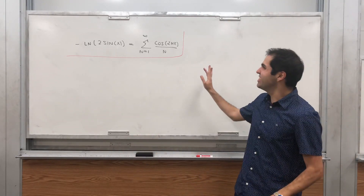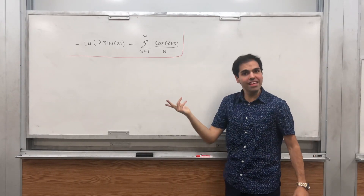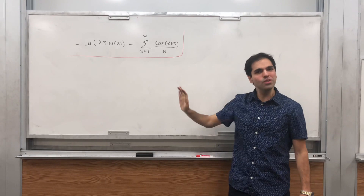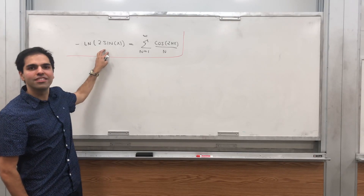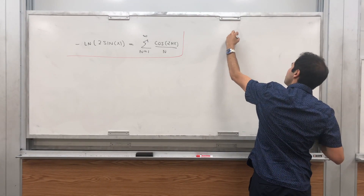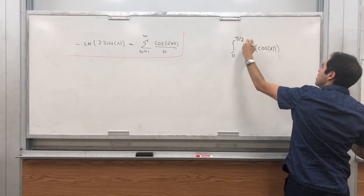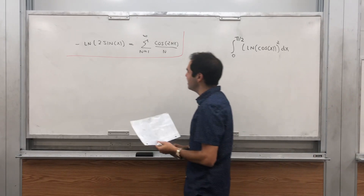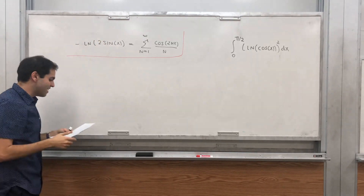Thanks for watching. Today I want to show you an absolutely beautiful identity that you might think involves Fourier series, but doesn't involve it at all. I will show this identity using pure calculus. I actually use an analog of this identity in another video to calculate the integral from 0 to π/2 of ln(cos(x))² dx. Today it's just to prove the crux of that other integral, which is this identity.